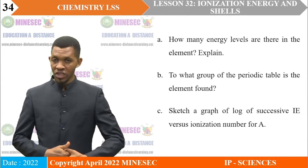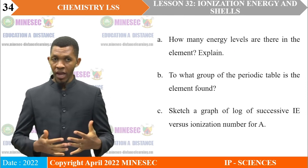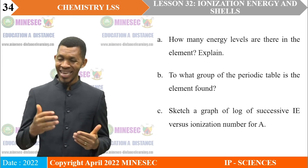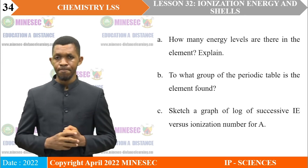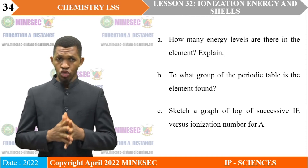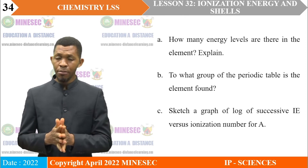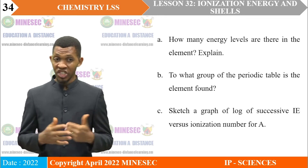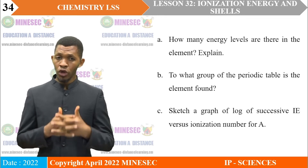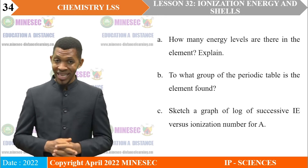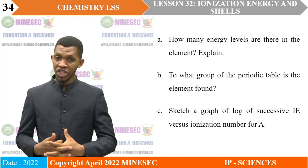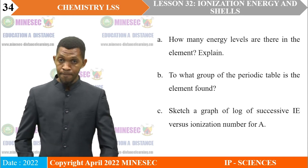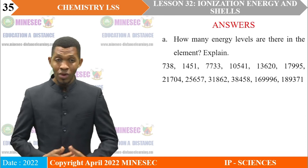Questions: A — how many energy levels are there in the element? Explain. B — to what group of the periodic table is the element found? C — sketch a graph of log₁₀ of successive ionization energy versus ionization number for element A.